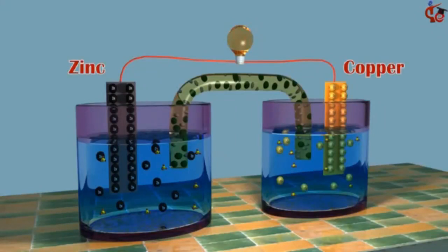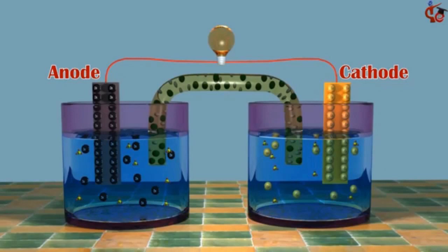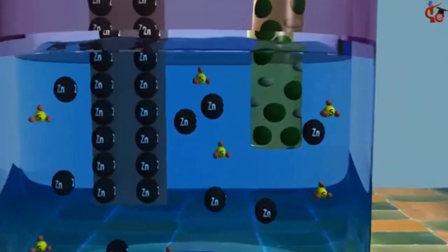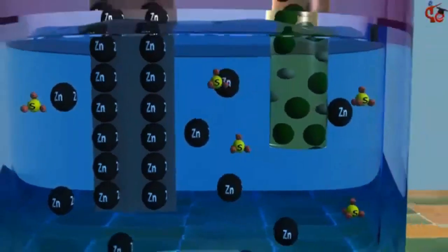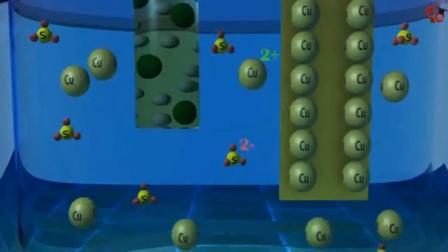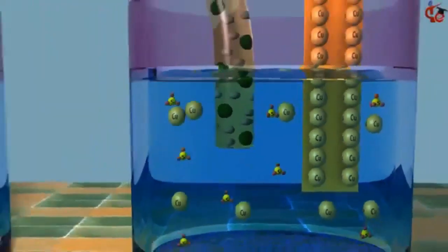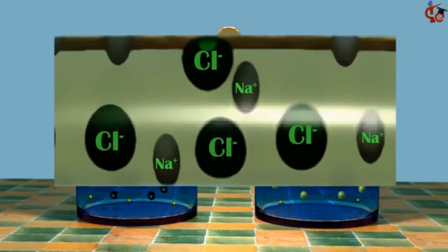A useful galvanic cell can be constructed by using zinc and copper. The anode is a zinc bar placed into a zinc sulfate solution, and the cathode is a copper bar placed into a copper sulfate solution. The two solutions are connected by a porous sodium chloride salt bridge that prevents the two solutions from mixing but allows ions to migrate.